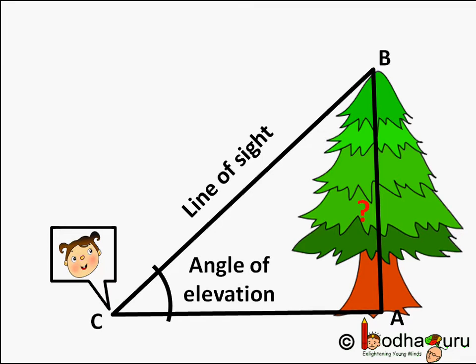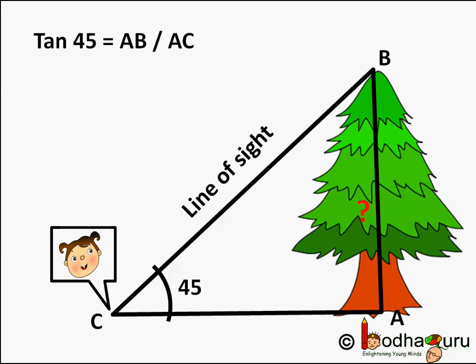Where AB is the height of the tree. Let us say the angle of elevation in this example is 45 degrees, and AC, that is our distance from the base of the tree, is 15 meters.